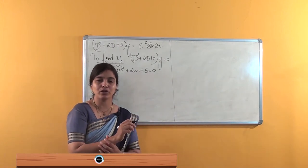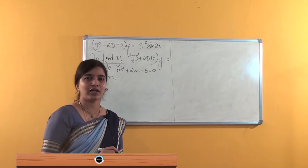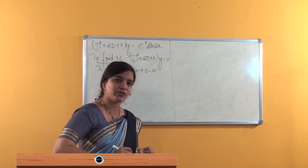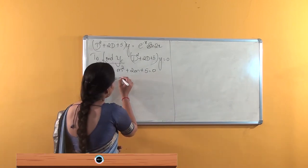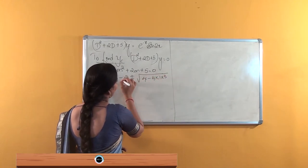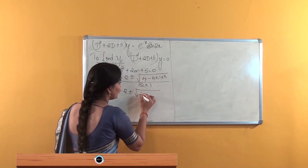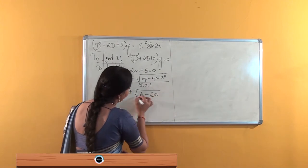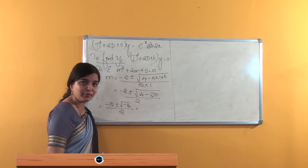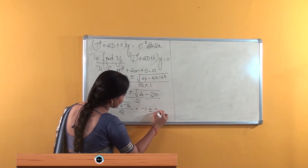Now we have to solve this quadratic equation to get the roots. I will use the quadratic formula which you have already learned: minus b plus or minus square root of b² minus 4ac, divided by 2a. So here we get minus 2 plus or minus square root of 4 minus 20, divided by 2. That gives us minus 2 plus or minus square root of minus 16, divided by 2, and when we simplify we get 4i, with 2 common outside, giving us minus 1 plus or minus 2i.